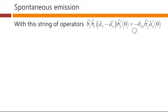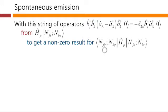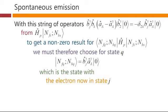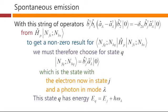So with this string of operators written out now in our simplified form from this two-thirds of the matrix element, then, to get a non-zero result for the complete matrix element, we must therefore choose that the state q that we're looking at on the left-hand side here, which will be the final state of the system that we're interested in, has to be this state. Otherwise, this matrix element is going to be zero, because the left-hand side would be orthogonal to what we got from the right-hand two-thirds. So it's the same arguments as we've made before. And this is a state with the electron now in some particular final state j. We don't yet know which one, it could be state 1 or state 2, and a photon in mode lambda. And this state will have energy corresponding to the electron energy in whichever state j we end up with here, plus the photon energy for a photon in some mode lambda.